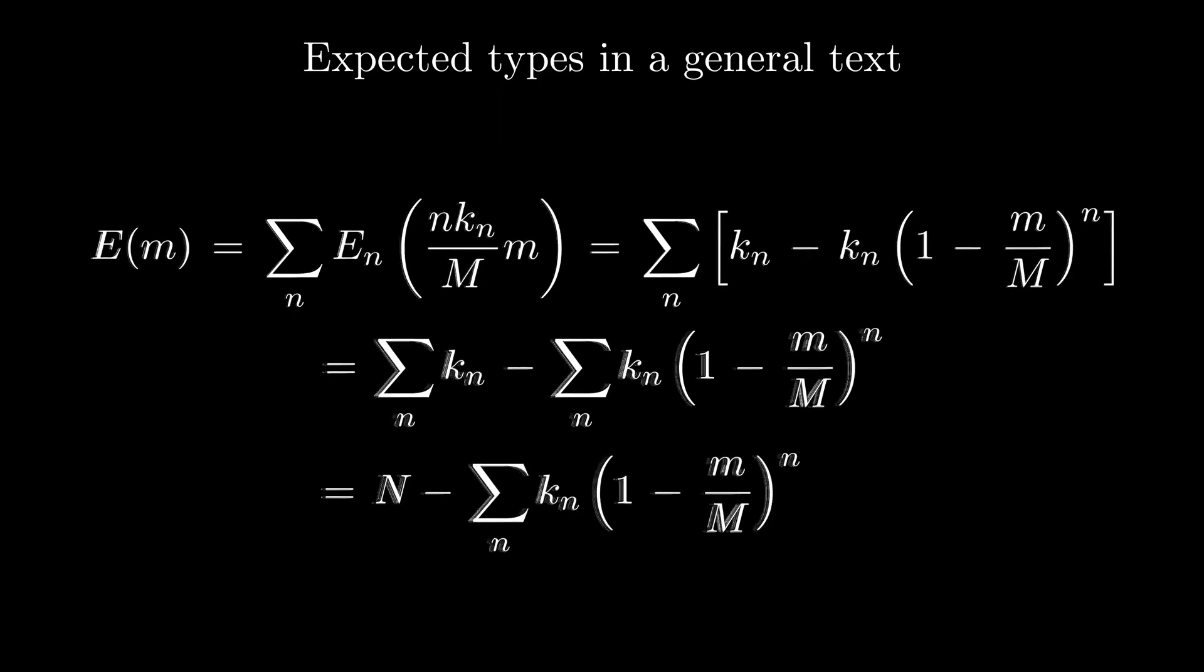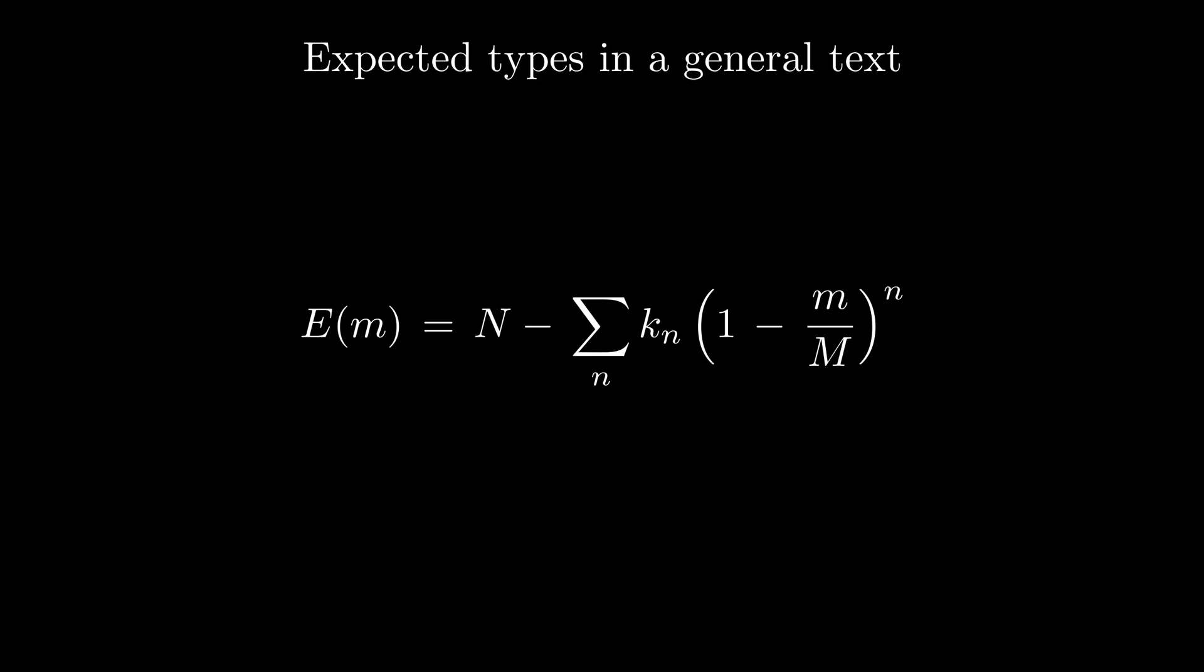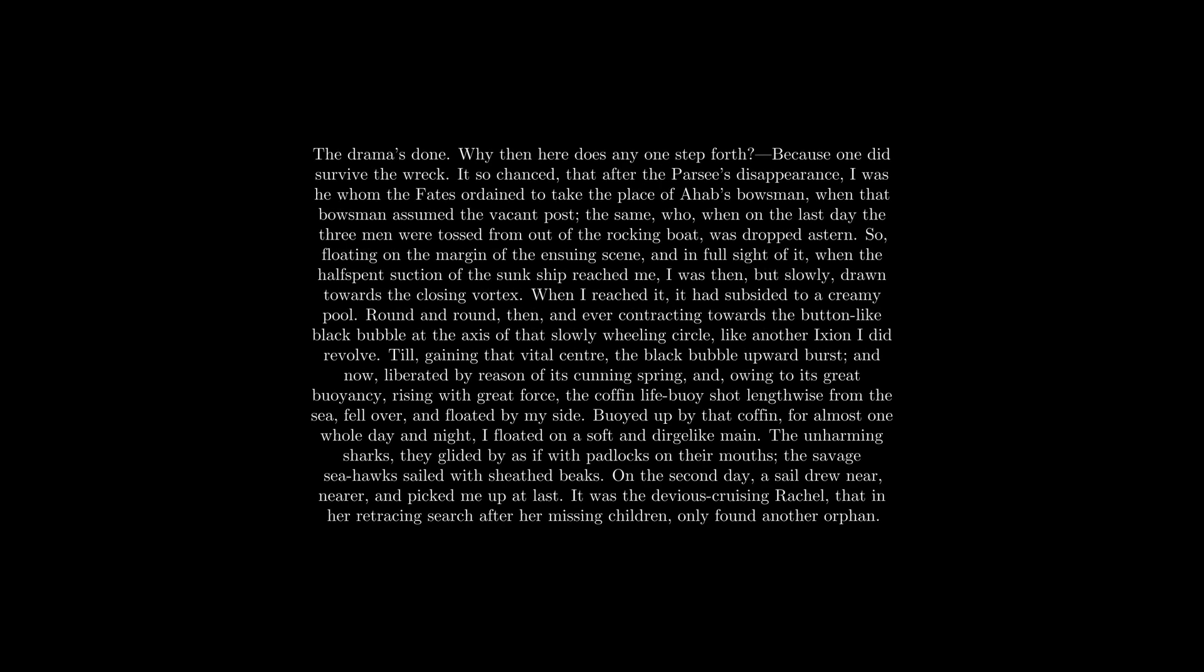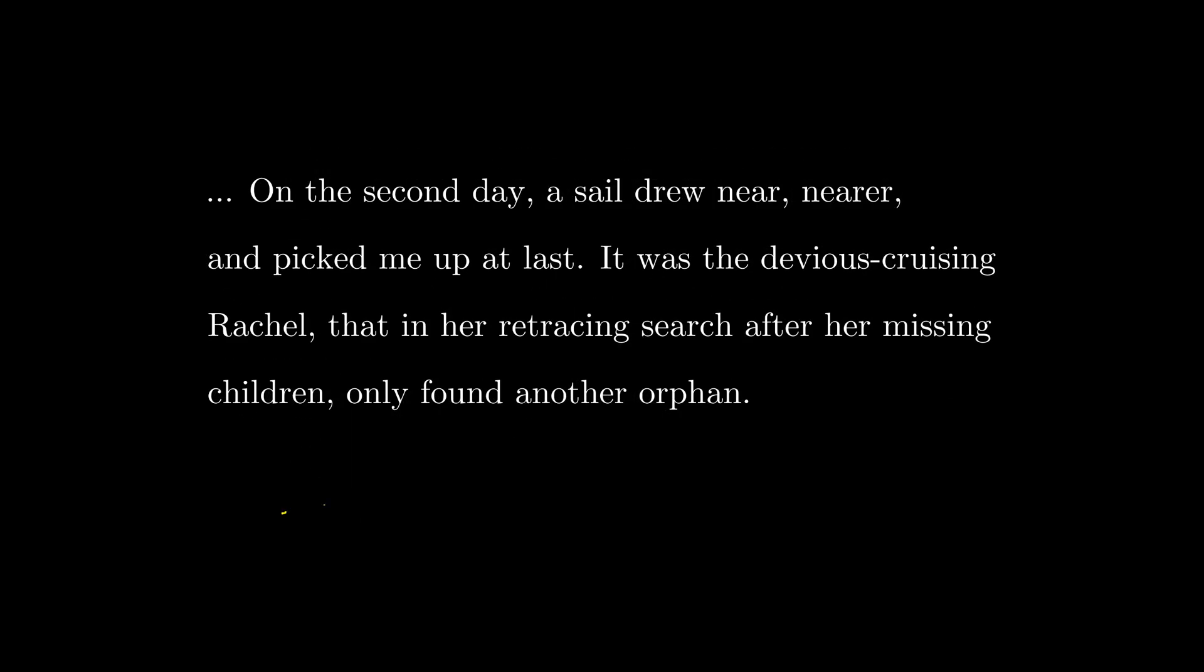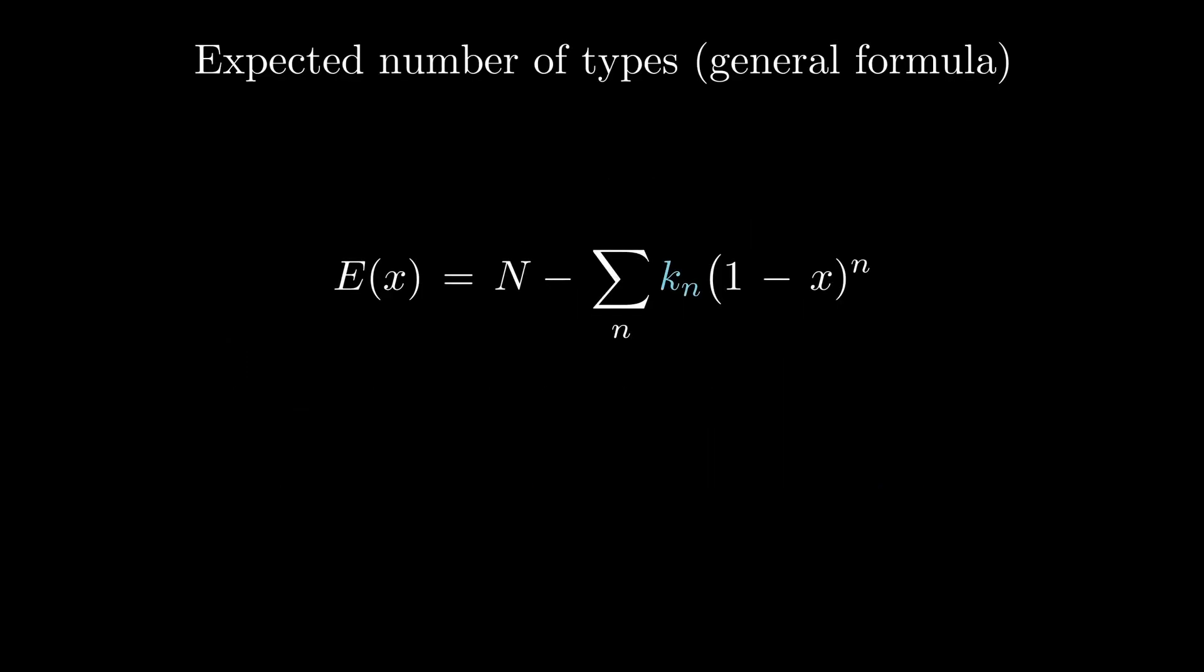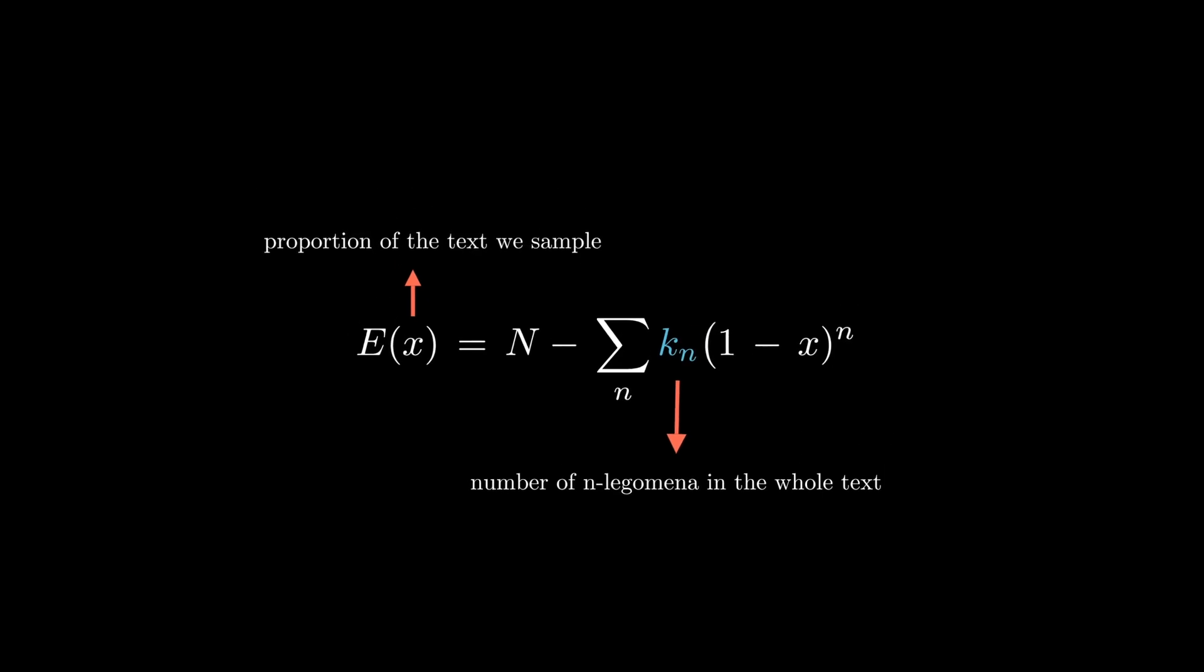Finally, this is our general function derived from first principles. We can parameterize with the proportion of the whole text which we sample. Remember how we promised to predict the structure of random text samples? Well, if we can somehow model kn for the whole text, how could E of x help us determine the number of n legomena?